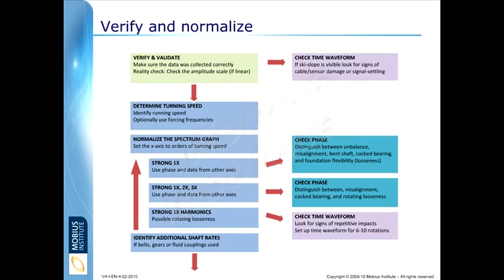Number one, we need to verify the data. No ski slopes, no nasty harmonics that are there as a result of bad measurements. We're also going to perhaps compare to a baseline or alarm limits and just make sure that the amplitude's high enough or that there's been enough change that warrants extra investigation.